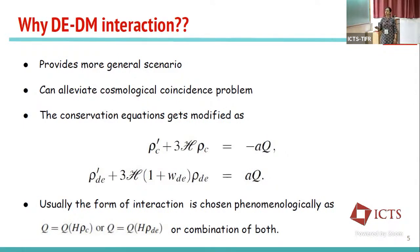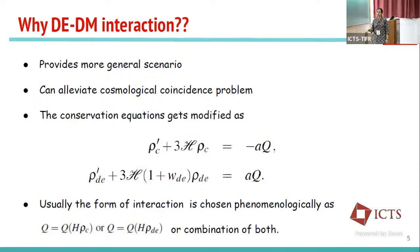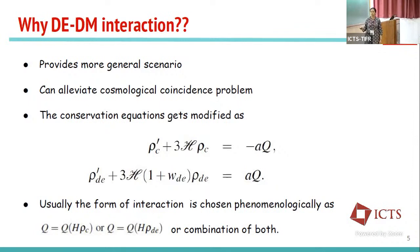If we consider this interaction, the conservation equations get modified with a source term Q on the right-hand side. In cosmology, the source term is usually chosen phenomenologically. The usual choices are Q as a function of H times rho_c or H times rho_dark_energy. Dimensionally, the source term must have the dimension of energy density times the inverse of time, and the first candidate with dimension of inverse time in cosmology is the Hubble parameter H.